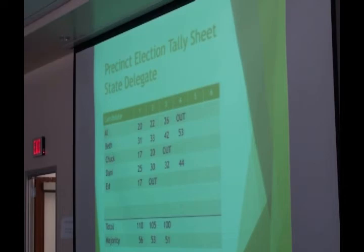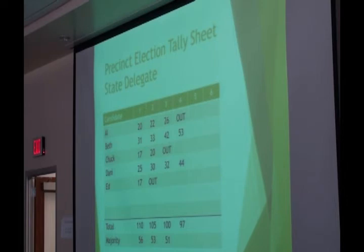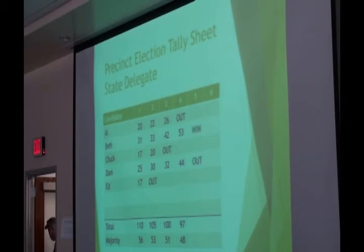His ballots — the ballots in his stack — are distributed among Beth and Danny according to the next highest preference. We have 53 plus 44 which is 97. What's the majority? Half of 97 is 47.5, add a half to get 48. Yes, we have one candidate who has a majority — that's Beth. She wins the election.